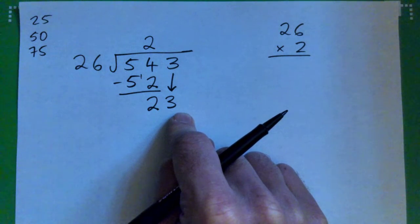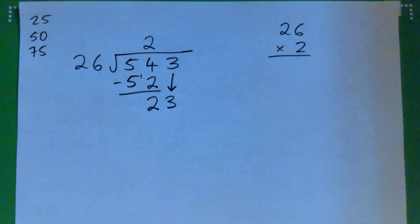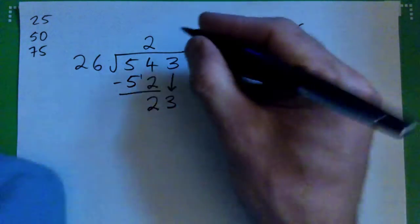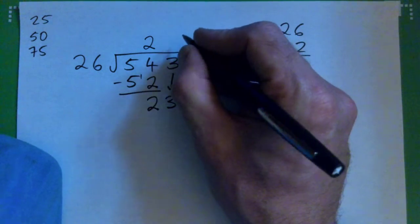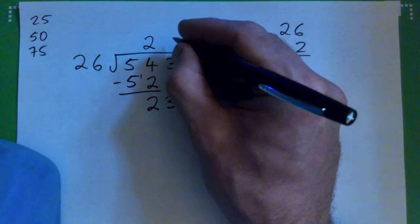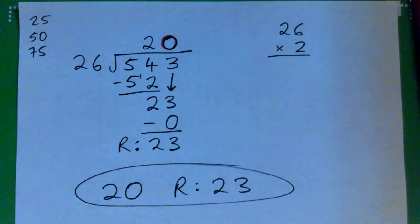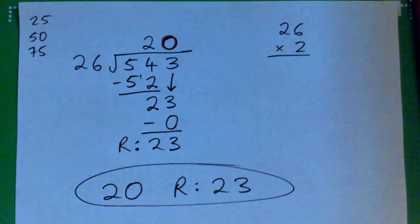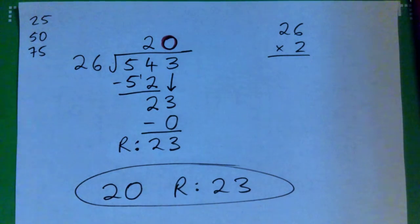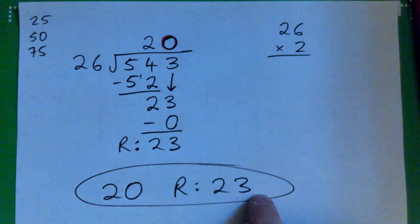That's a funny one. What we end up with is just 20, remainder 23. That's how it works out.